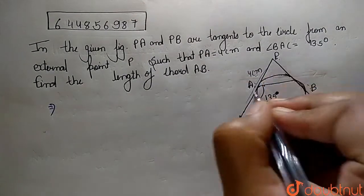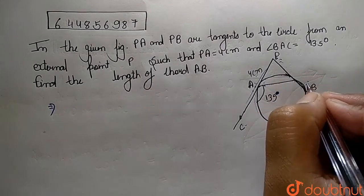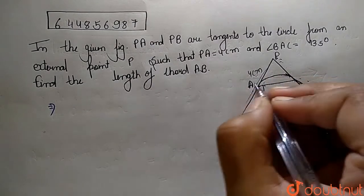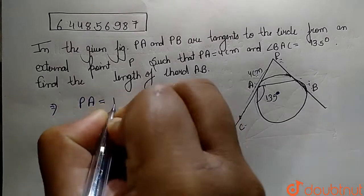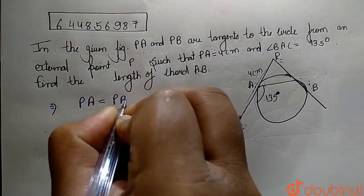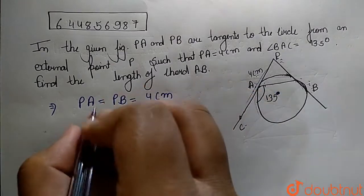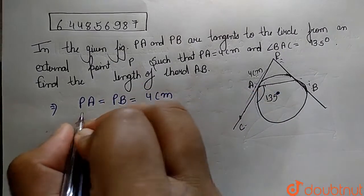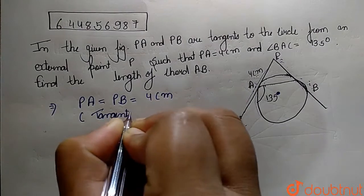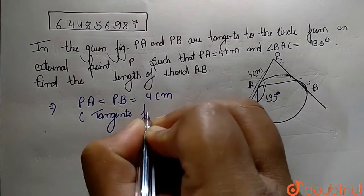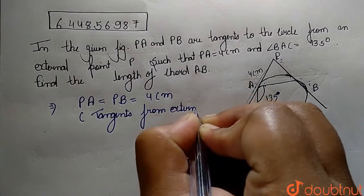Since PA and PB are both tangents from an external point, we know that PA equals PB. So the value of PA and PB is 4 centimeters. These are tangents from an external point.